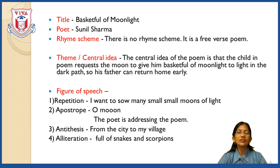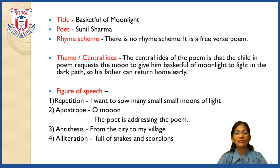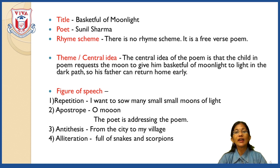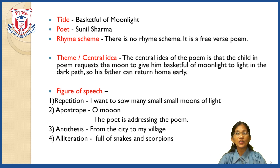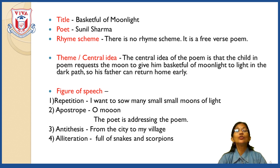Question: What does the poet wish to get from the moon, and why? The poet wishes to get moonlight because he wants to light a dark path so his father can return home early. Question: Why is the road from city to village very tough? Because the road is full of scorpions and snakes, and neither cars nor buses travel on it.